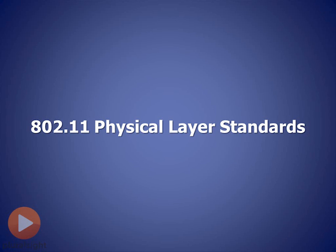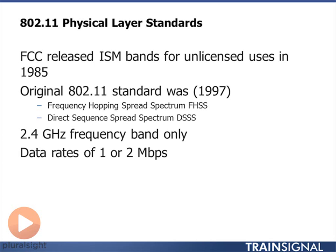In this next part of the lesson, we're going to focus on the 802.11 physical layer standards. Some years ago, the FCC here in the United States released spectrum for unlicensed use, and countries around the world were doing the same around the same time. The very first 802.11 standard was finalized in 1997, and it contained two spread spectrum radios: a frequency hopping technique and a direct sequence spread spectrum technology.